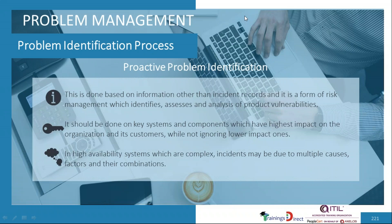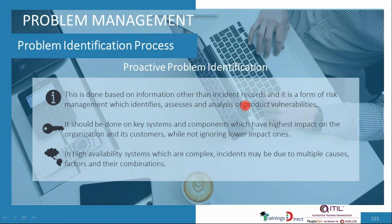Looking more into the proactive problem identification process: identification is done based on information other than incident records, from sources like vendors and development teams. Once that information comes in, a problem can be identified and recorded, including through analysis of vulnerabilities in a product based on information from suppliers or auditors. As a best practice, proactive problem identification should be done on key systems and components with high impact on the organization and its customers, though lower-impact systems should not be ignored either.